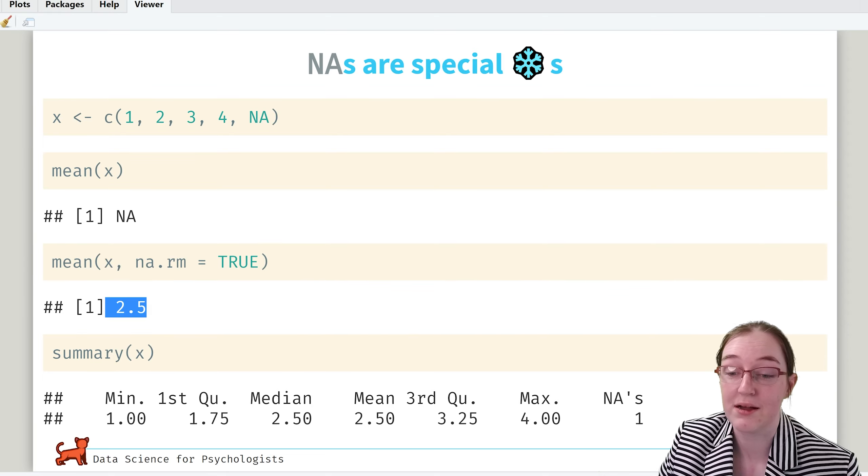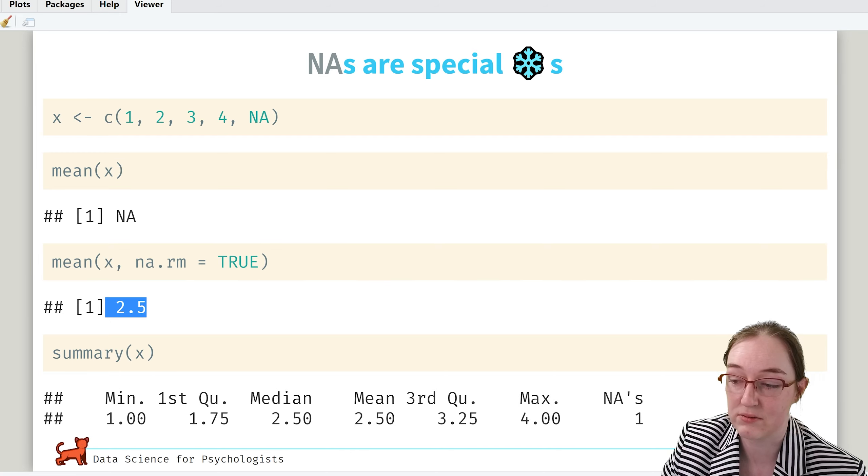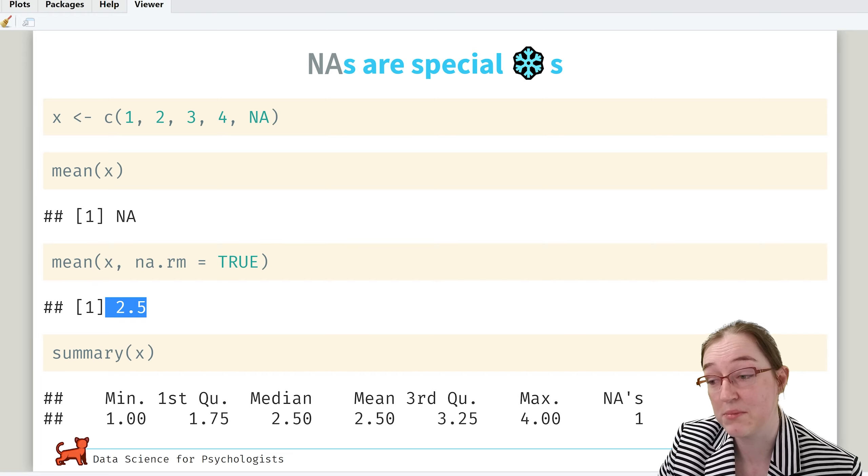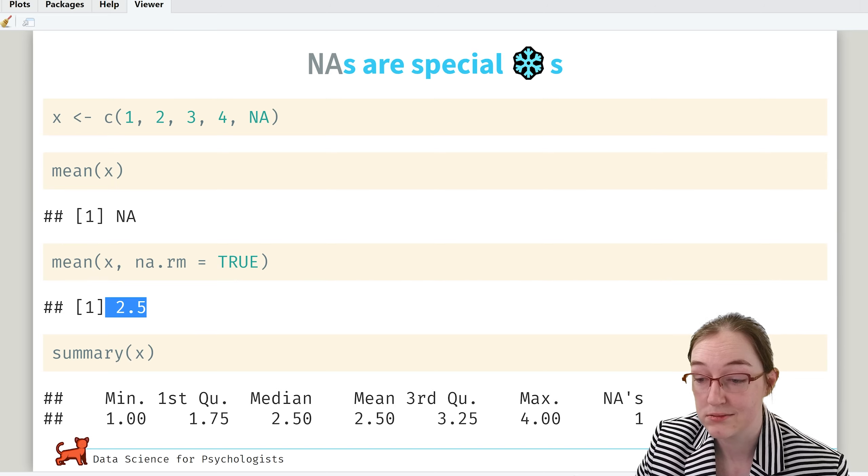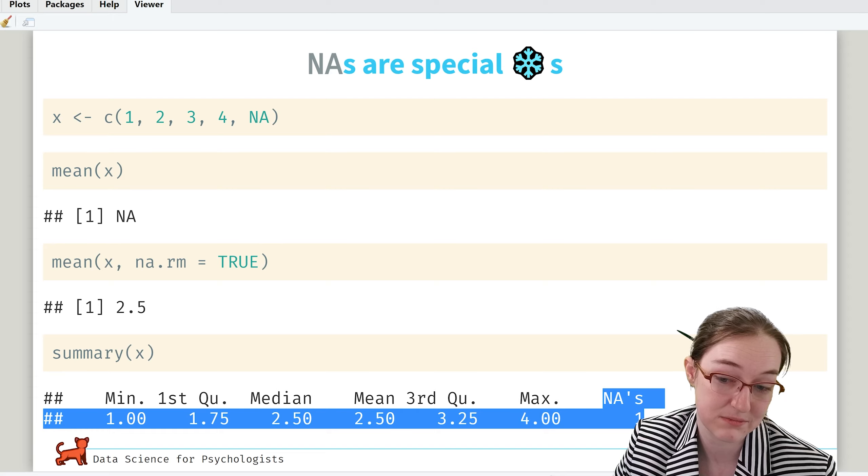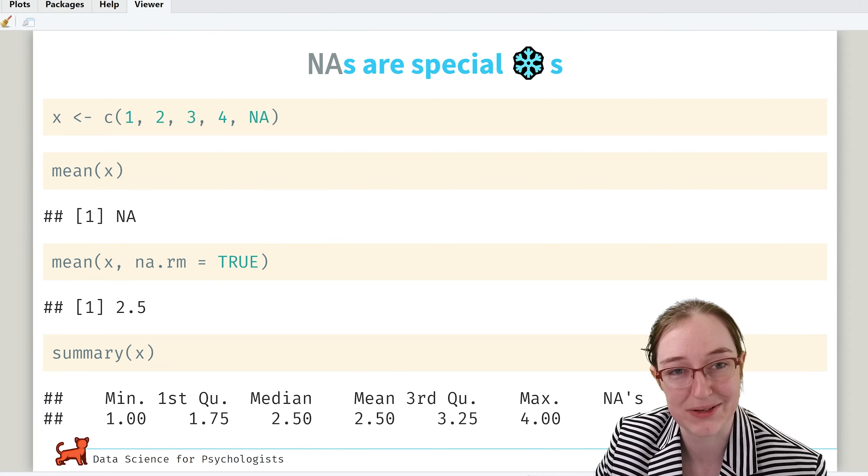Now for summary, it's a little smarter about it. So what it does is it will give you those five magic numbers, or I guess six. We've got the minimum, the first quartile, the median which is the second quartile, the mean, the third quartile, and the maximum, as well as indicating how many NAs. So it'll give you all that, and it kind of treats NA like its own group.